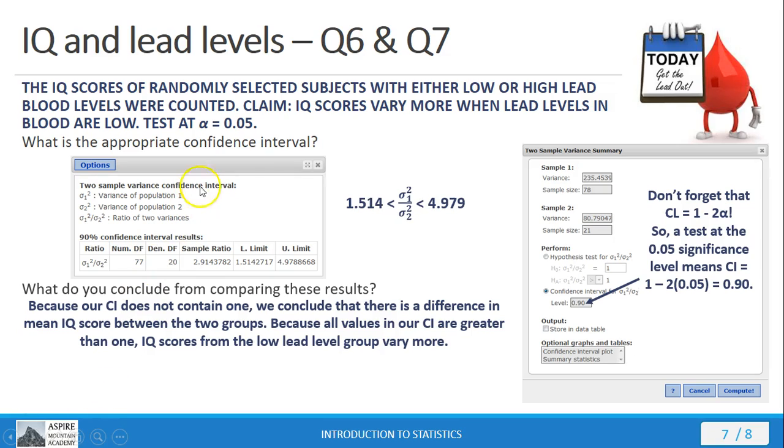Okay. Furthermore, furthermore, all the values in the confidence interval are greater than 1. Because all the values in the confidence interval are greater than 1, that means this number here on top is going to always be greater than the number on the bottom.